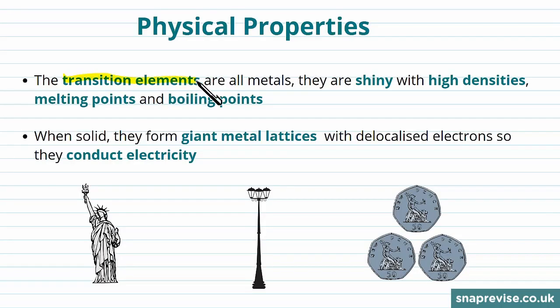The transition elements are all metals, which is why we often call them the transition metals. They're shiny, with high densities typically, and they also have high melting points and high boiling points.